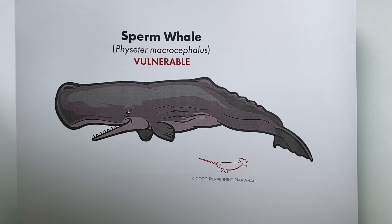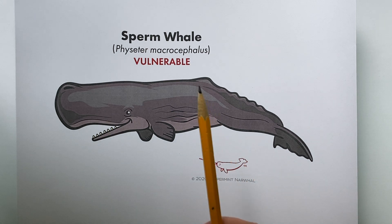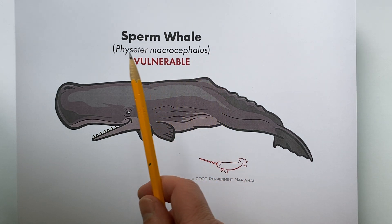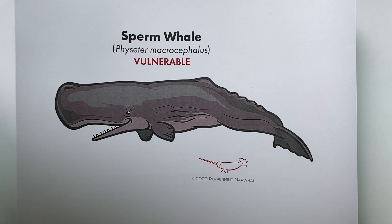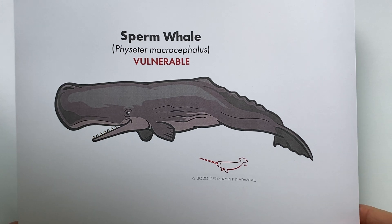The sperm whale is made famous from the book Moby Dick, which was written by Herman Melville. We'll talk a little bit about that story and the actual true story behind it. The sperm whale is the largest of the toothed whales and also the largest animal with teeth on the planet. Its conservation status is vulnerable to extinction, from the IUCN's Red List of Threatened Species, so we have some conservation work to do for this animal.